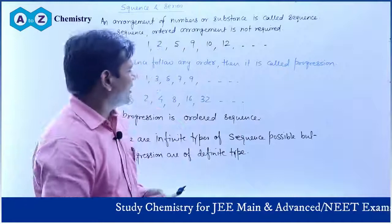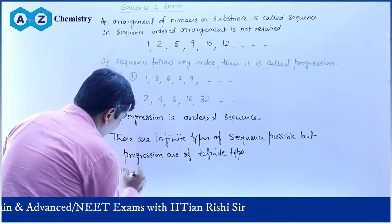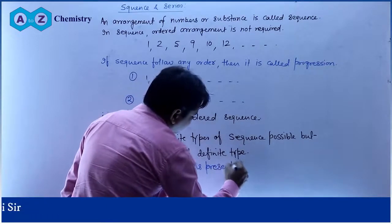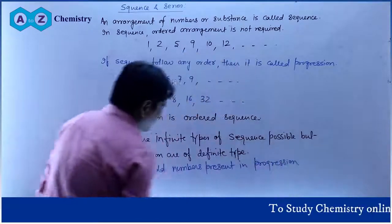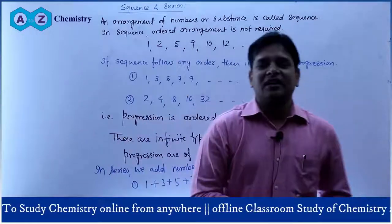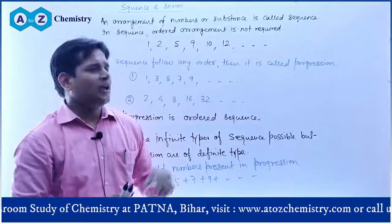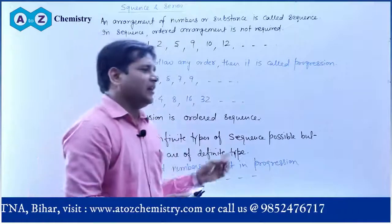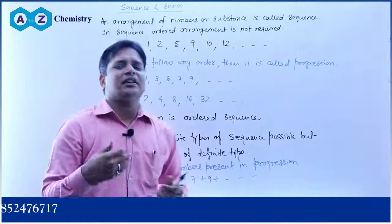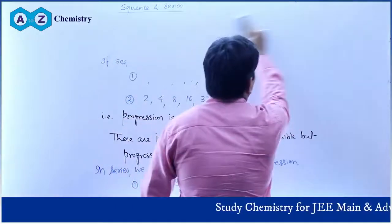If you take the numbers present in a progression and add them, then it is called a Series. We add the numbers present in a progression to form a series — like 1 + 3 + 5 + 7 + 9 + ... and so on — that becomes a series. So to summarize: sequence is simply an arrangement of numbers; progression is an ordered arrangement; there are infinite types of sequences but definite types of progressions; and adding progression terms forms a series.